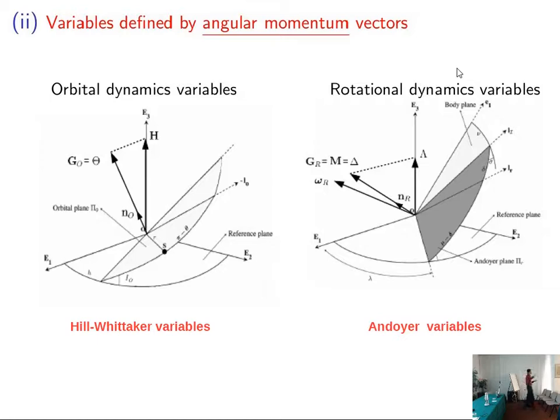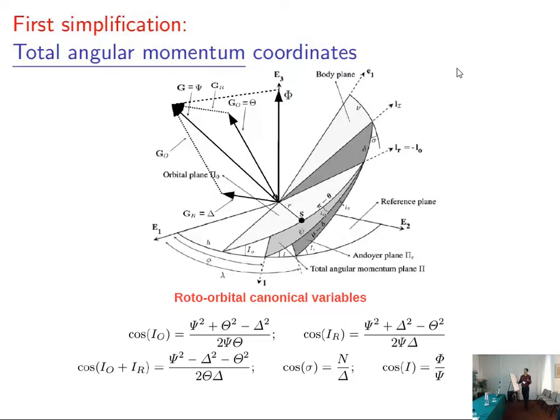Following the procedure of San Santuario and Ferrandi they presented in the 80s, we can, using these sets of variables, build this set of variables here. In this set we can see that we have relations with inclination of the orbital and rotational planes. It's a set of coordinates where the main angles will be referred to the total angular momentum coordinates.